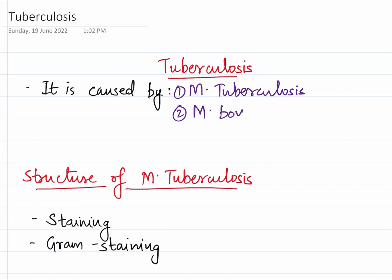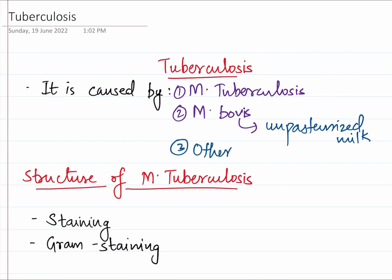Now Mycobacterium bovis is nowadays not commonly seen. It usually enters the body by consumption of unpasteurized milk, which is why we do not see it much anymore. There are a few other less common species such as Mycobacterium africanum and Mycobacterium microti. We don't have to worry about them much, but just know that there are other species.